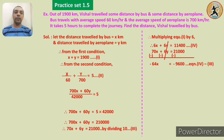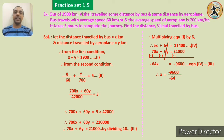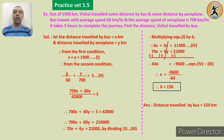Dividing both sides by minus 64: x equals minus 9600 divided by minus 64. The negatives cancel, giving x equals 150. So the distance travelled by the bus is 150 kilometres.